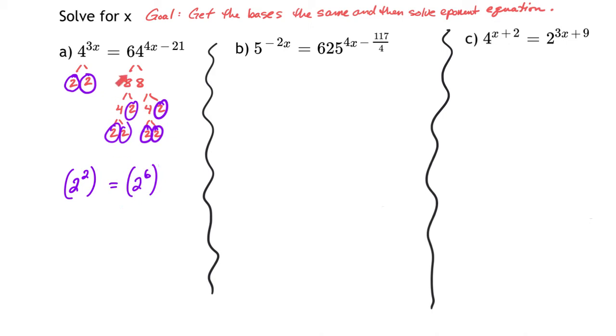Now that we've replaced the 64 and the 4, we have a power to a power. Whenever we have a power to a power, you multiply. So 2 times 3x gives 6x. And 6 times 4x and 6 times negative 21 gives 2 to the power of 24x minus 126.